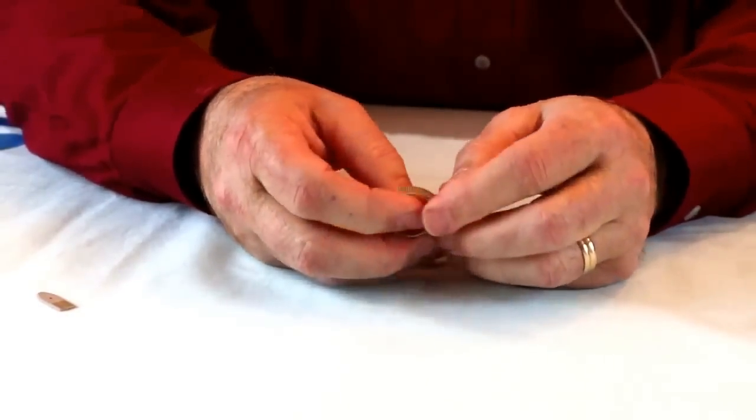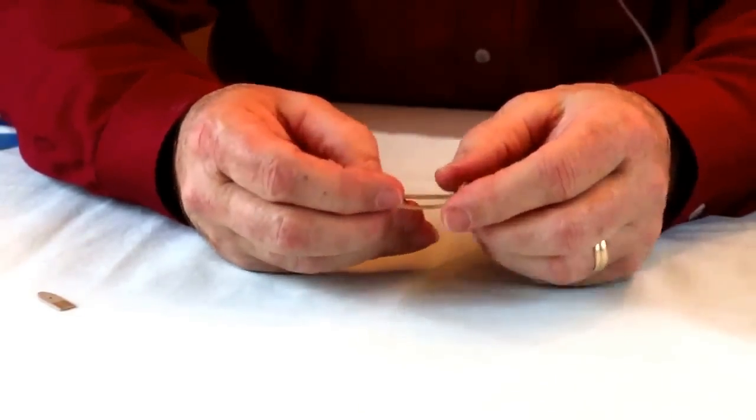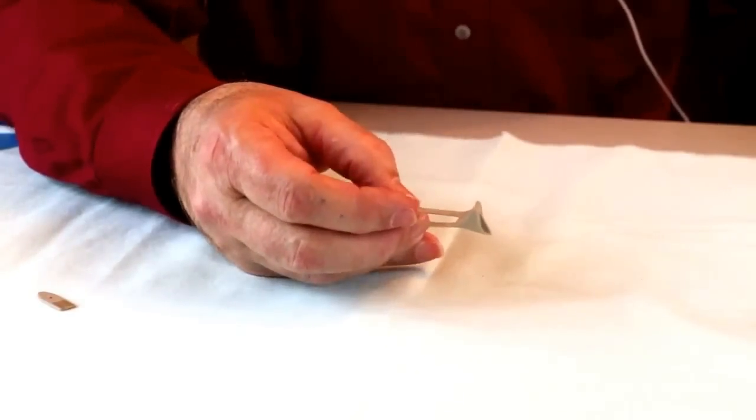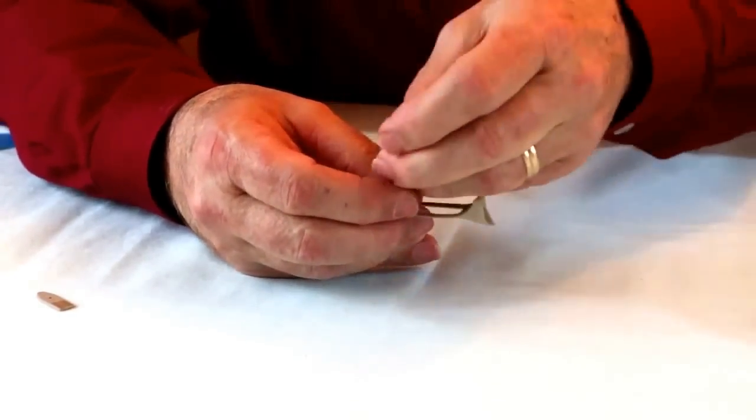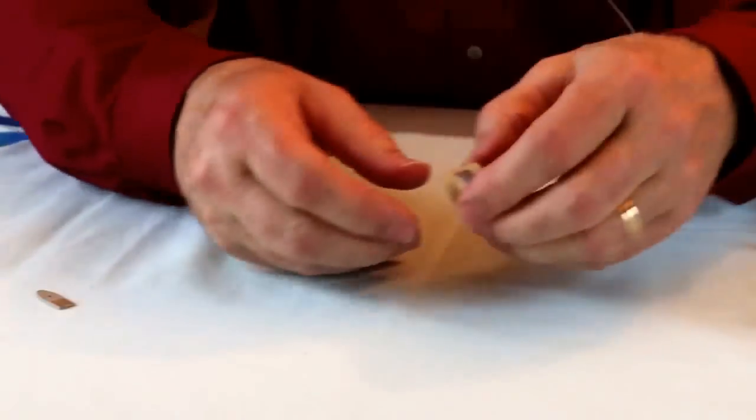When you've got it where you want it, then you open it up for the last time and you place this piece of Velcro on it and now you have a cushion that lays against your cuticle and you're ready to play.